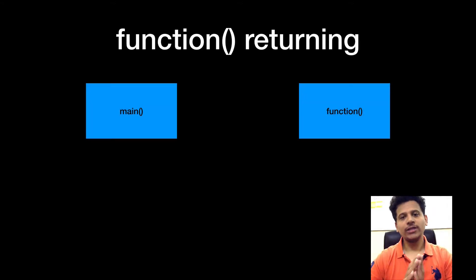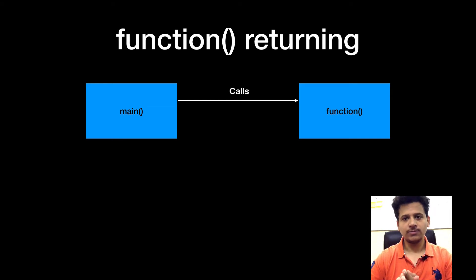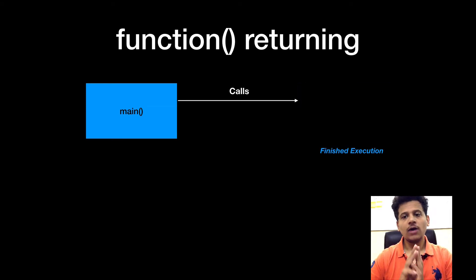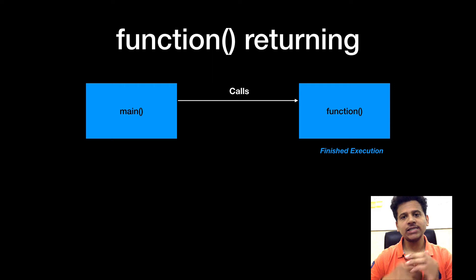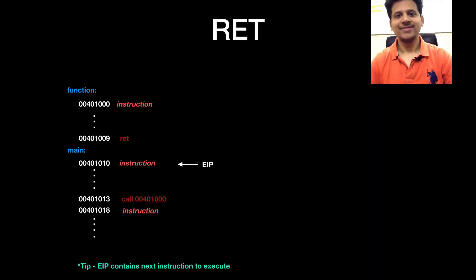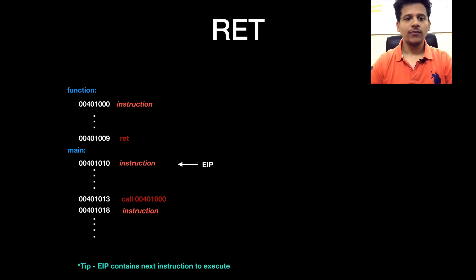As we saw in the last video, main calls a function. After finishing its execution, the function returns to main. Now this is a part of assembly code. We are in the main function and EIP is pointing to the first instruction in main.